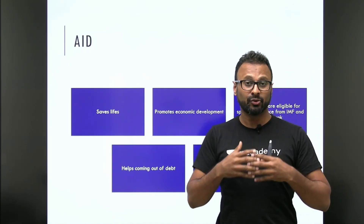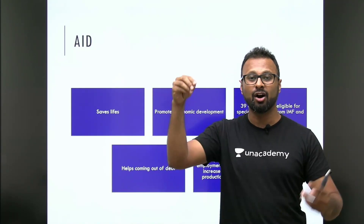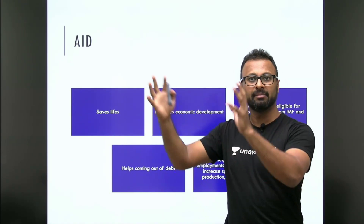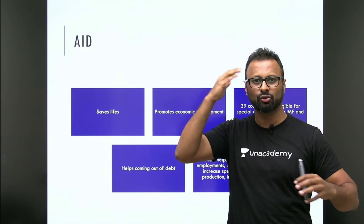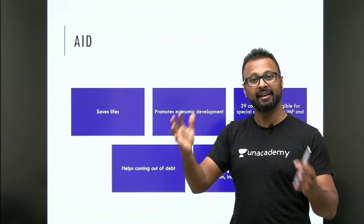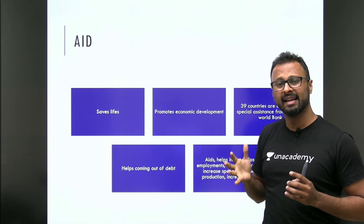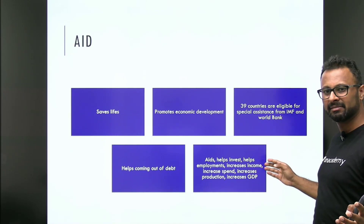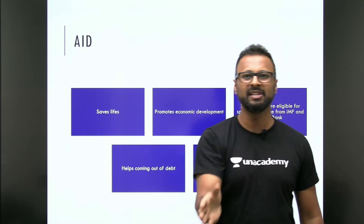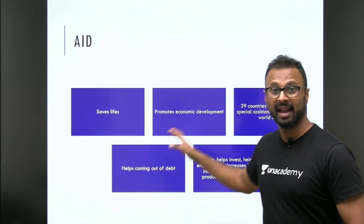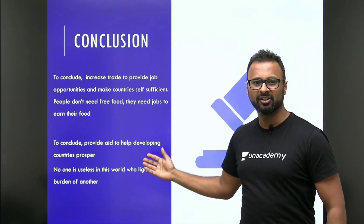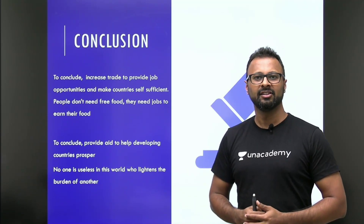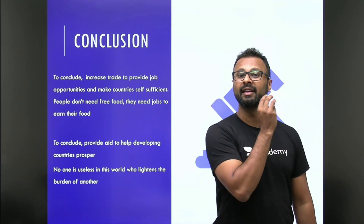Aid helps countries come out of debt. If a country is debt-ridden, it keeps falling behind — how can it invest in technology or innovation? ISRO is known for technological advancement, and it needs investment, for which aid is important so the country can innovate. Aid helps investment, which increases employment, income, production, GDP, and PCI — eventually doing good for the whole nation. To conclude: provide aid to help developing countries, for no one is useless in the world who lightens the burden of another. Thank you.